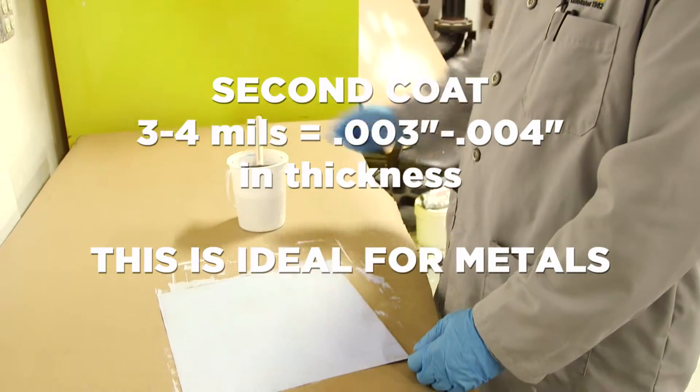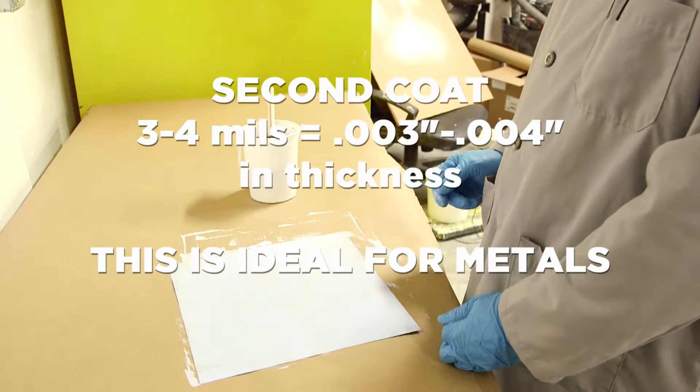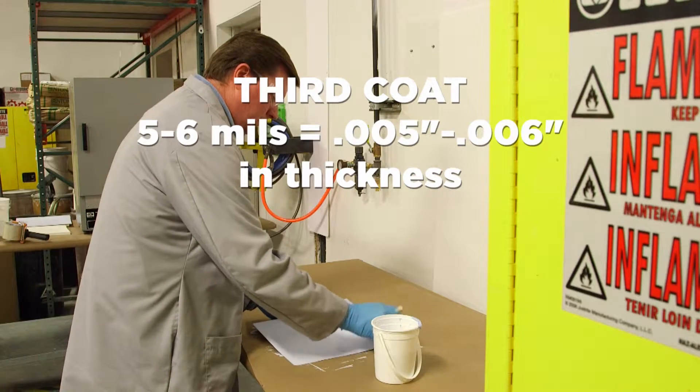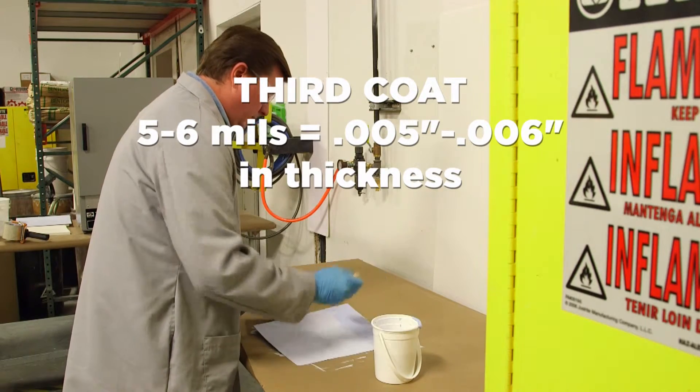This is often an ideal thickness for parts that are going to be thermal cycled. The metal piece is brushed with a third coating, yielding a coating of around five to six mils thickness.